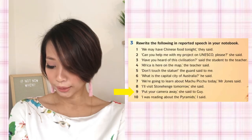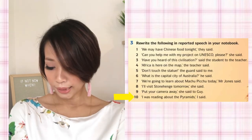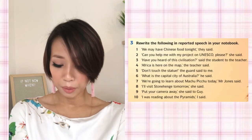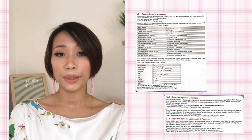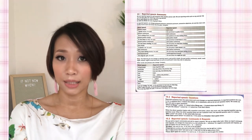Number 9: 'Put your camera away,' she said to Guy. Simpan camera anda, dia kata pada Guy. Number 10: 'I was reading about the pyramids,' I said. Saya sedang membaca tentang pyramid, saya kata. So kamu kenal-kenalpasi dulu ayat-ayat ini — sama ada statement kenyataan, question soalan, command arahan, atau request permintaan. Rujuk muka surat 173 dan 174 untuk lihat apa yang kamu perlu ubah. For example, tonight jadi that night.